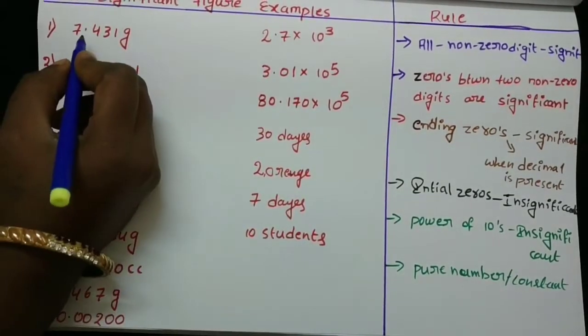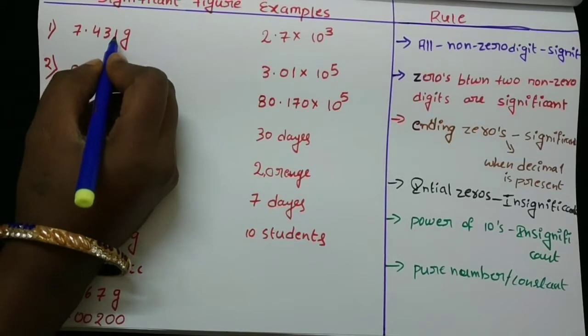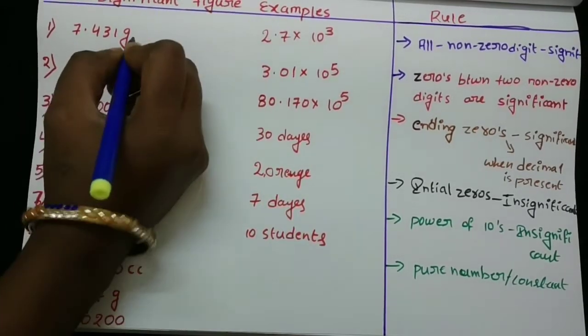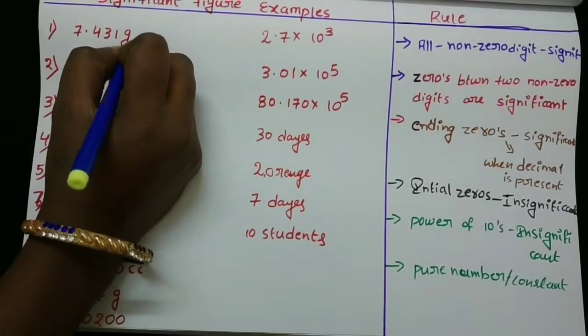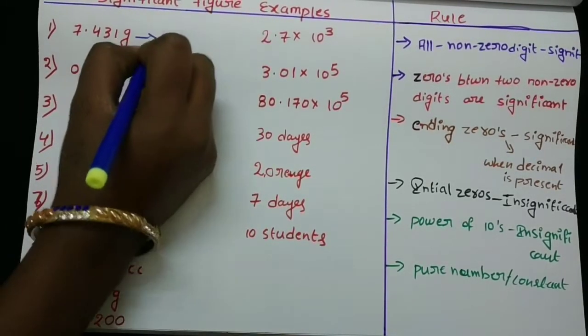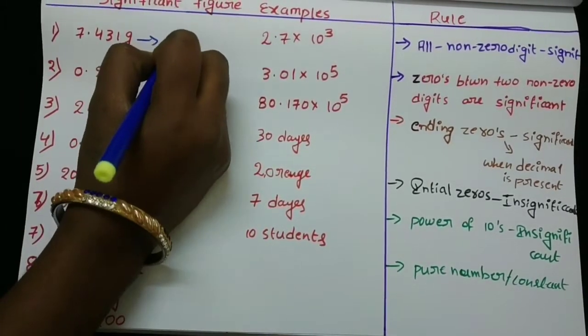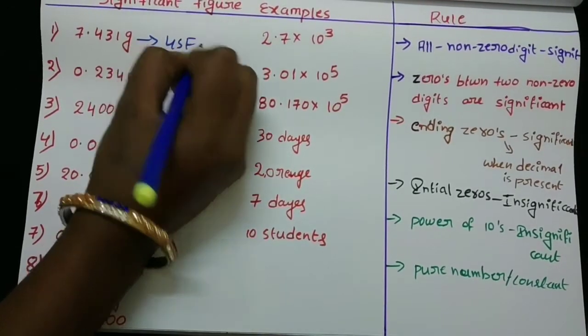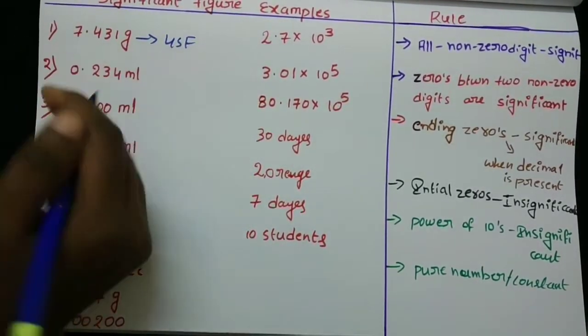7.431 grams — the number of significant figures is 4 significant figures, because all digits are non-zeros.